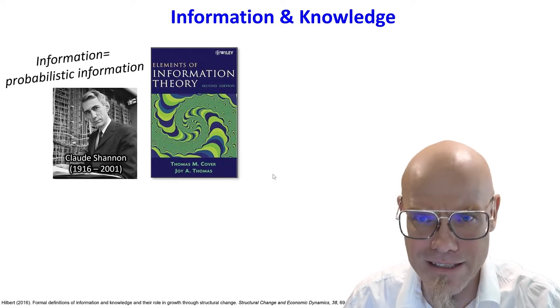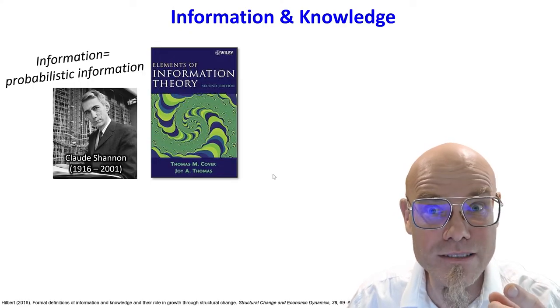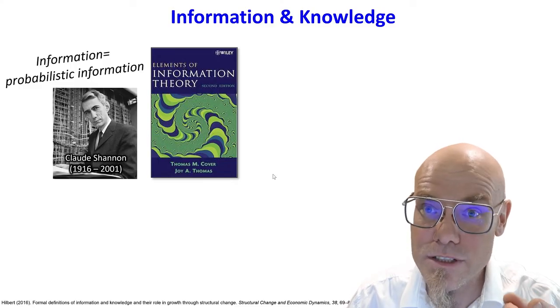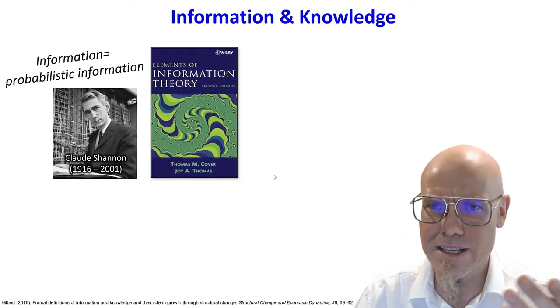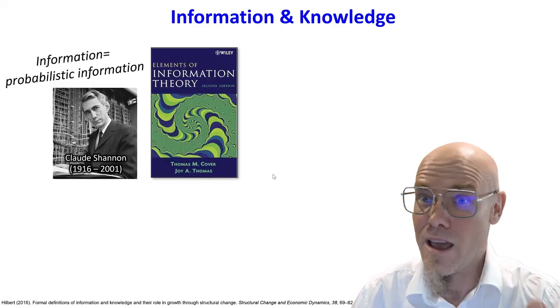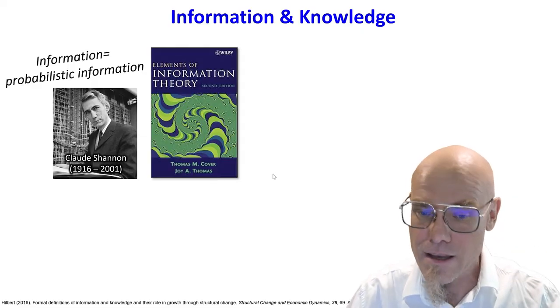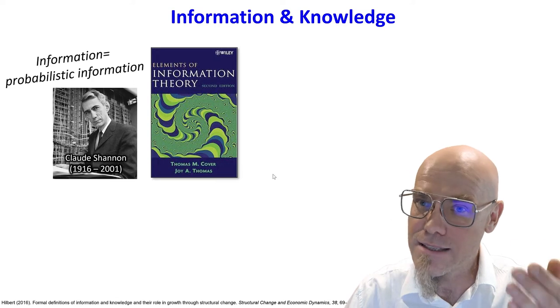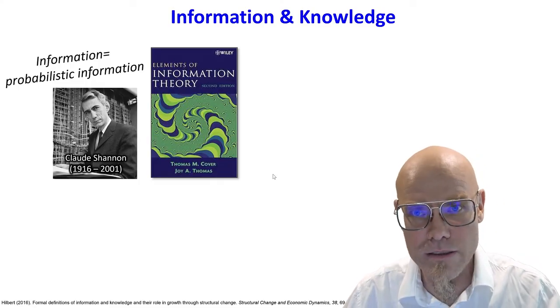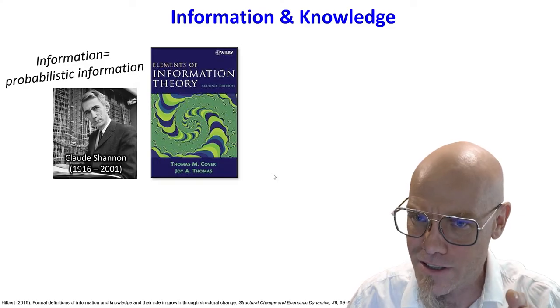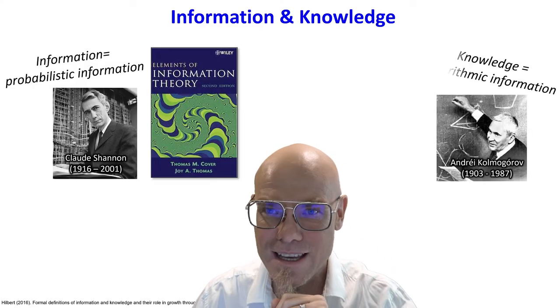And what Claude Shannon basically said is that information is the opposite of uncertainty. I mean, that makes sense. You don't have to be a mathematician for that. If you have uncertainty, you don't have information. And if I give you information, what happens to uncertainty? Well, it gets reduced, right? I give you a lot of information, then you don't have uncertainty anymore. So he said, well, if we can measure uncertainty with probabilities, hence we can measure the other side of the coin, which is information. So basically, it's a probabilistic theory where he measures information as the reduction of uncertainty.